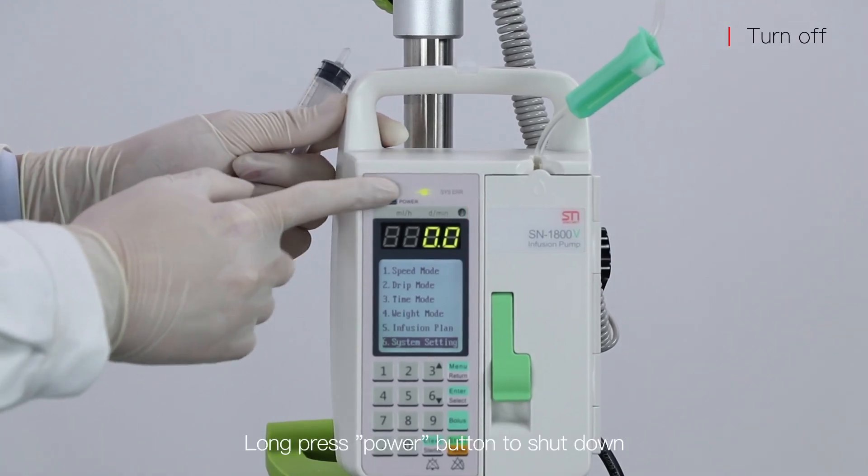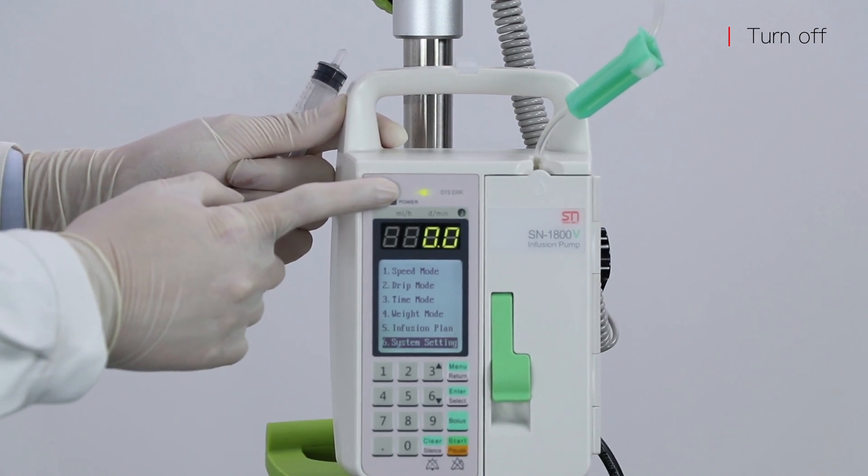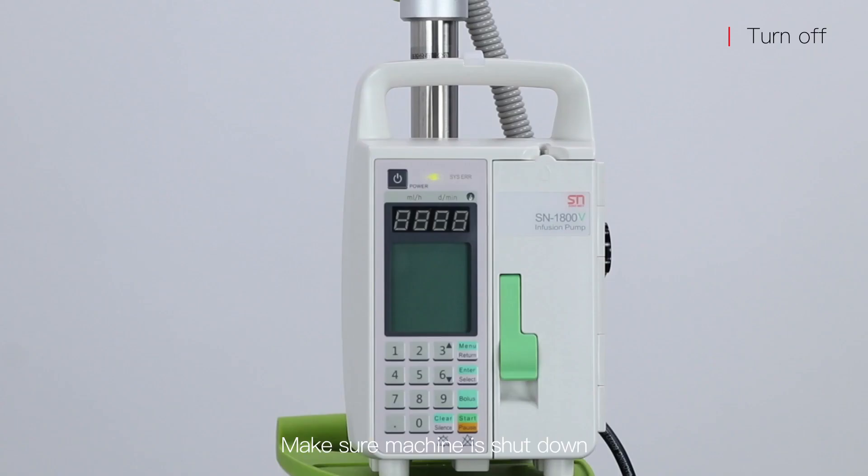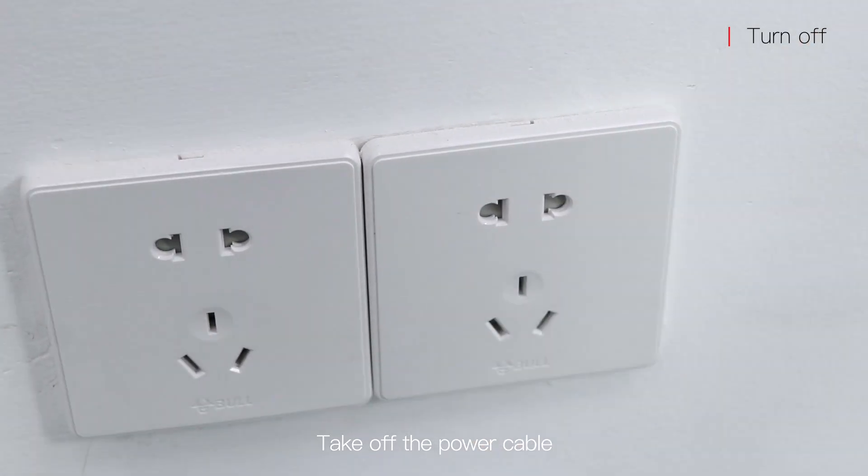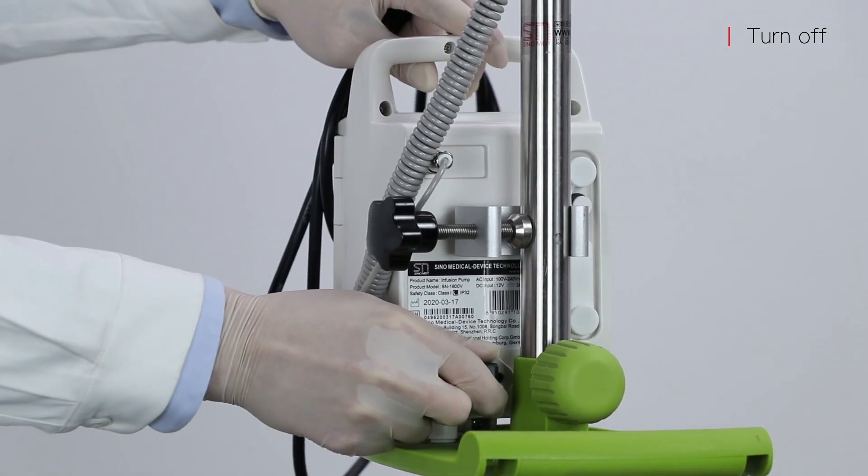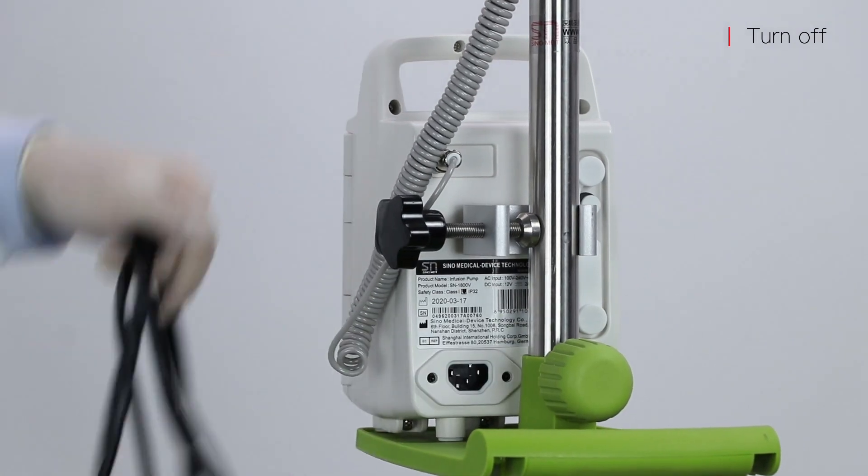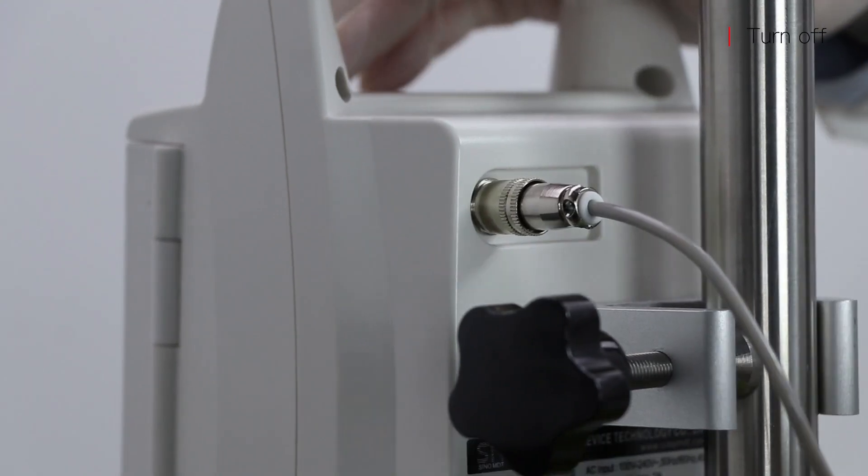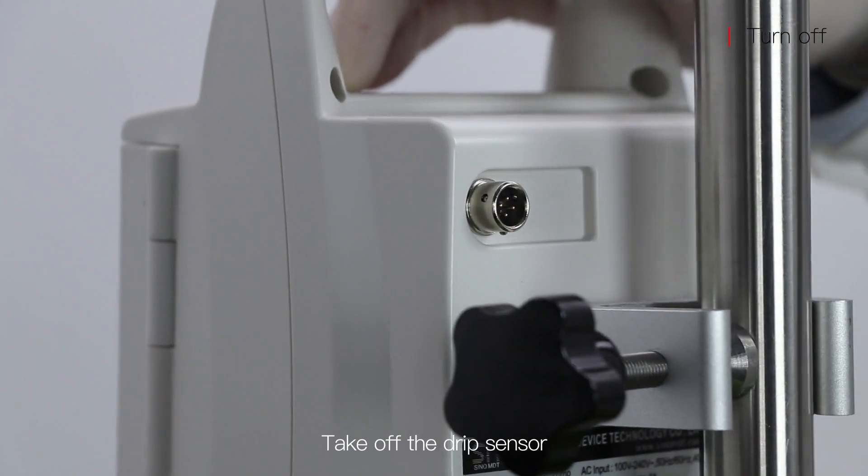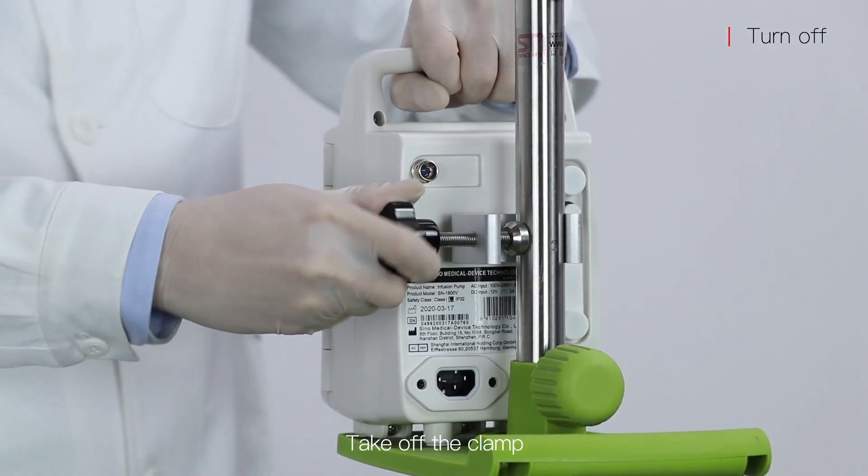Now press the power button to shut down. Make sure the system is shut down. Take off the power cable, take off the drip sensor, take off the clamp.